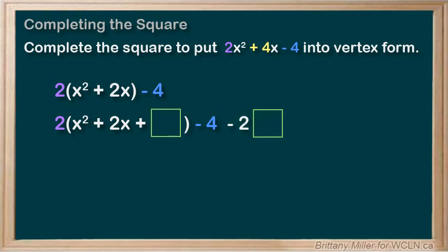Now we just do it like normal, ignoring the number out front. That means that b is 2. So b divided by 2 squared equals 2 divided by 2 squared, which is 1 squared, which is 1.